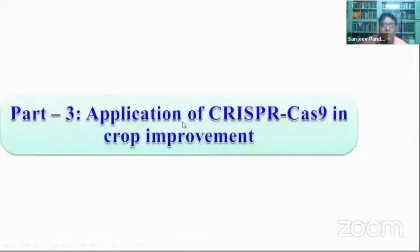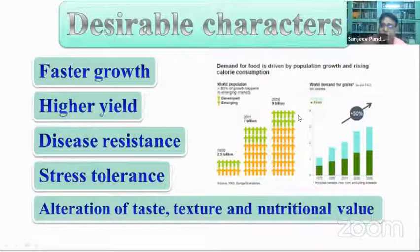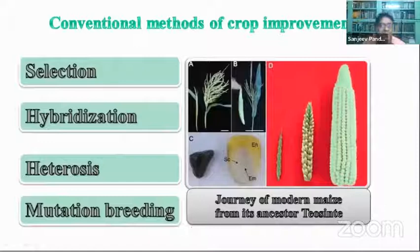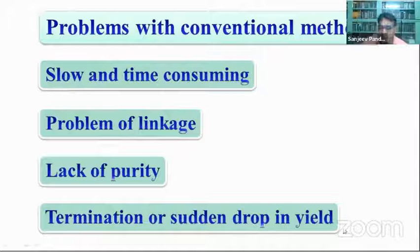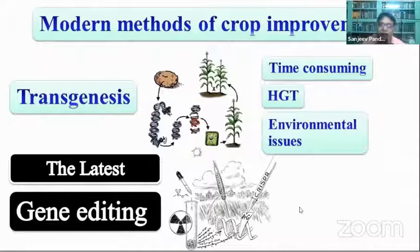Now for the application part. Desirable characters for feeding the ever-growing population include faster growth, higher yield, disease resistance, stress tolerance, and alteration in taste, texture, and nutritional value of crops. Conventional methods — selection, hybridization, mutation breeding — are slow and time-consuming, suffer from linkage problems where unwanted characters enter along with desired ones, and can show a sudden drop in yield across generations.